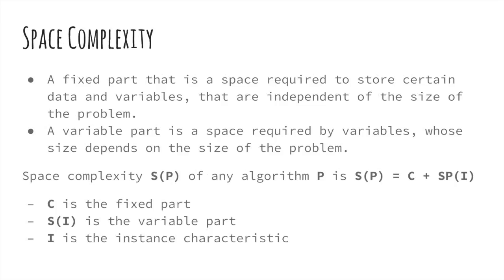So, the space complexity of an algorithm represents the amount of memory space required by an algorithm in its life cycle. Space required by an algorithm is equal to the sum of the following two components. The first component is a fixed part that is the space required to store certain data and variables that are independent of the size of the problem, for example, simple variables and constants used, program size, etc. A variable part is the space required by variables whose size depends on the size of the problem. This is the second component. For example, dynamic memory allocation, recursion, stack space, etc.